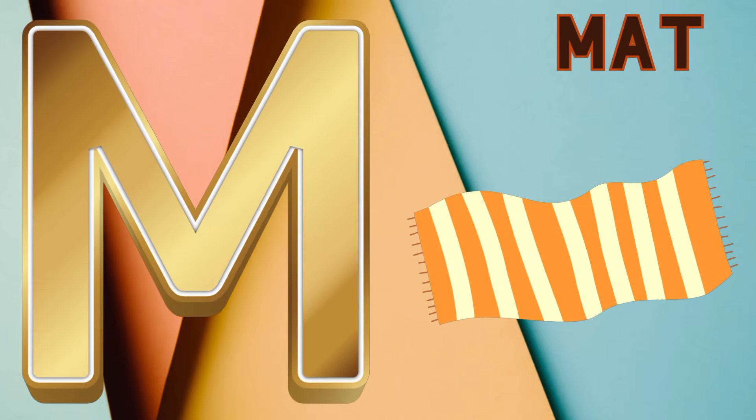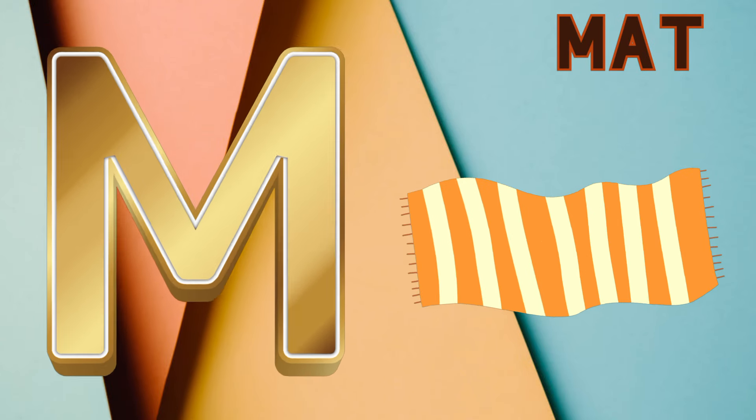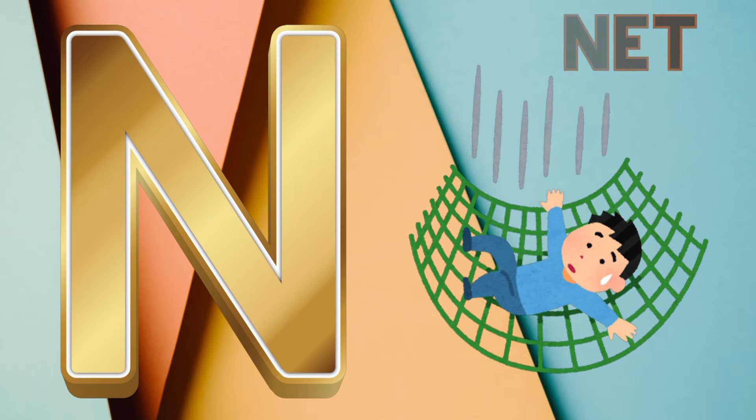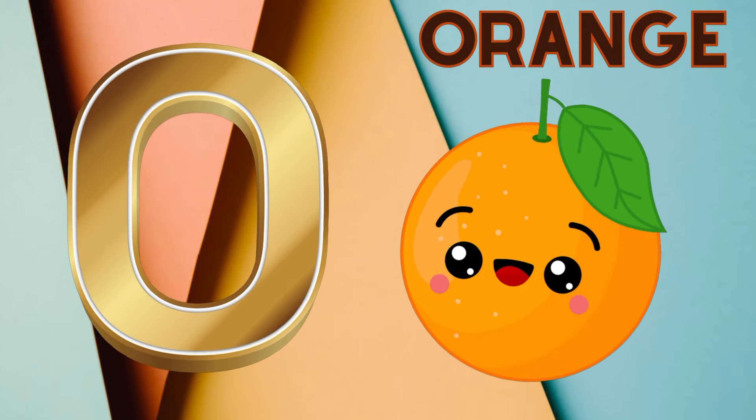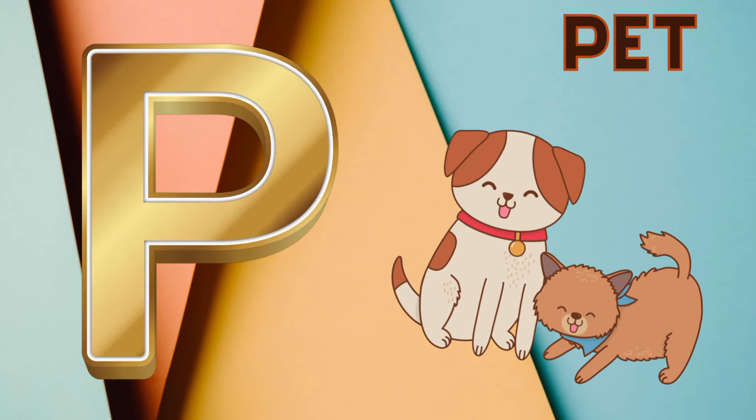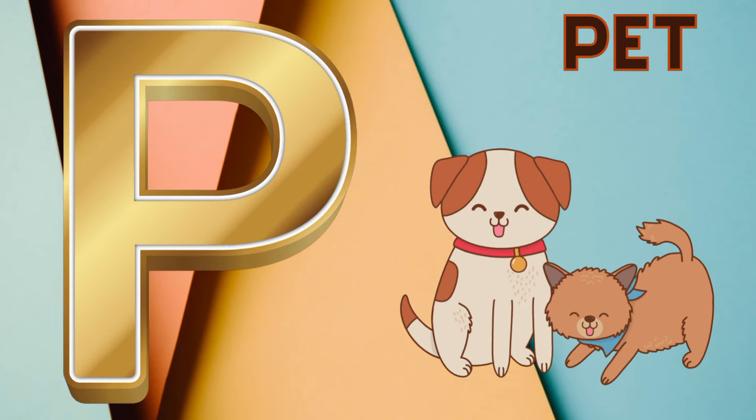M is for mat, m-m-mat. N is for net, n-n-net. O is for orange, o-o-orange. P is for pet, p-p-pet.